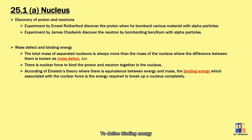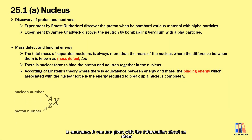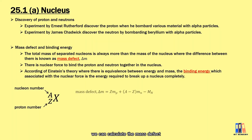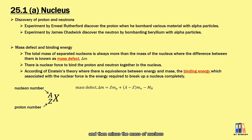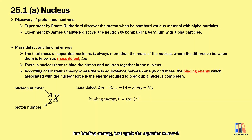To define binding energy, it is the energy required to completely break apart a nucleus. In summary, if we are given information about an atom, we can calculate the mass defect by adding the mass of separated nucleons — the total mass of protons and neutrons — and then subtracting the mass of the nucleus. For binding energy, just apply the equation E = mc².